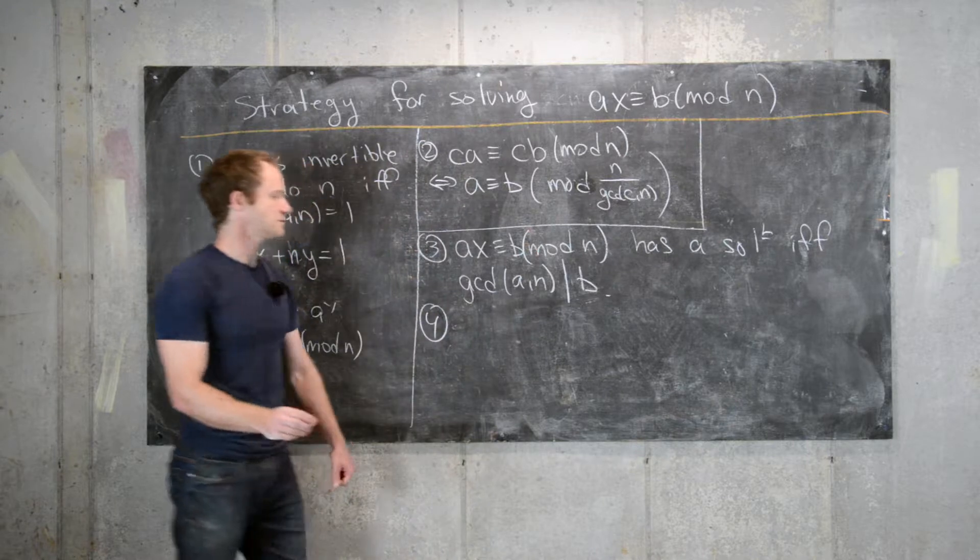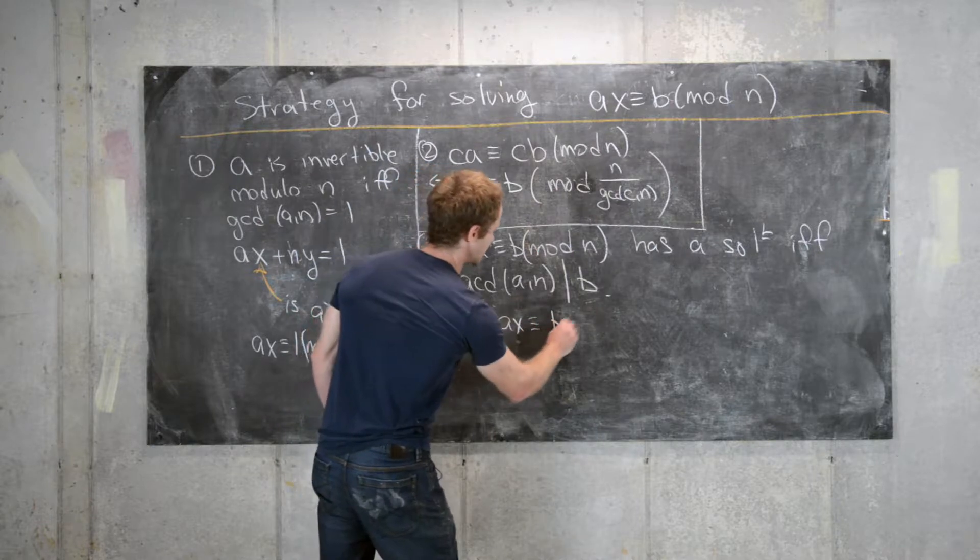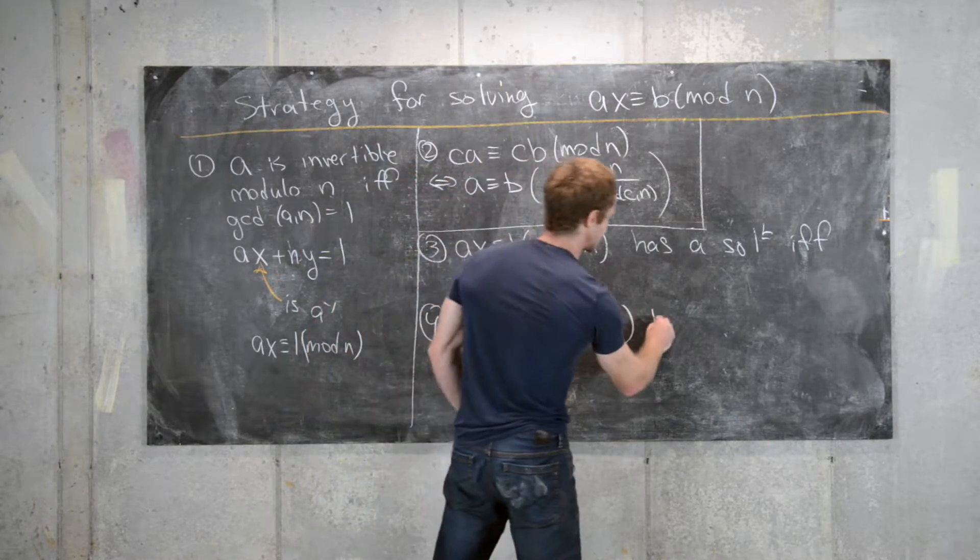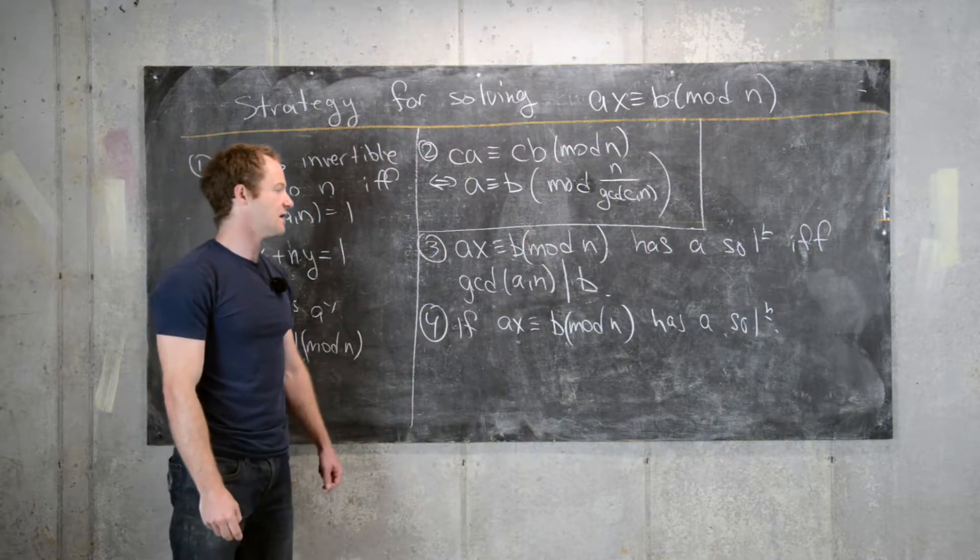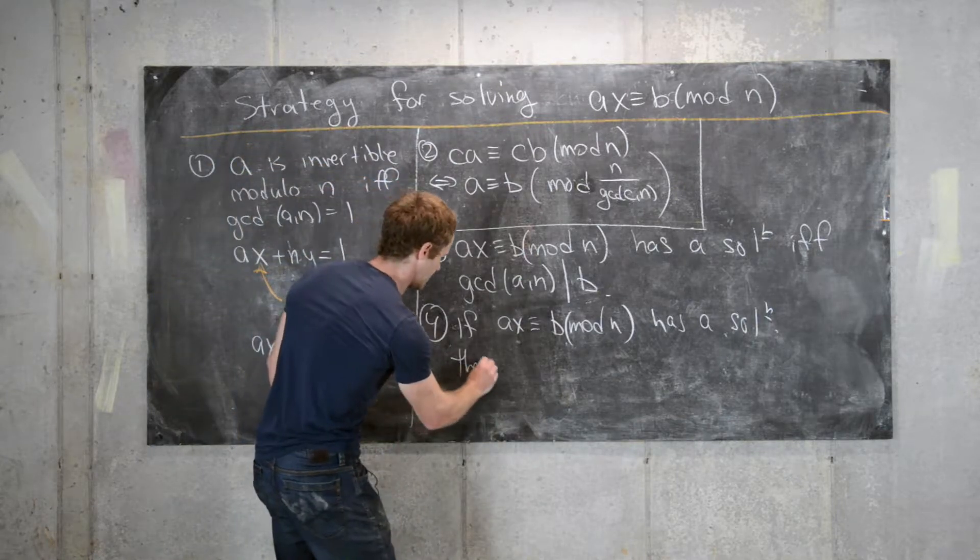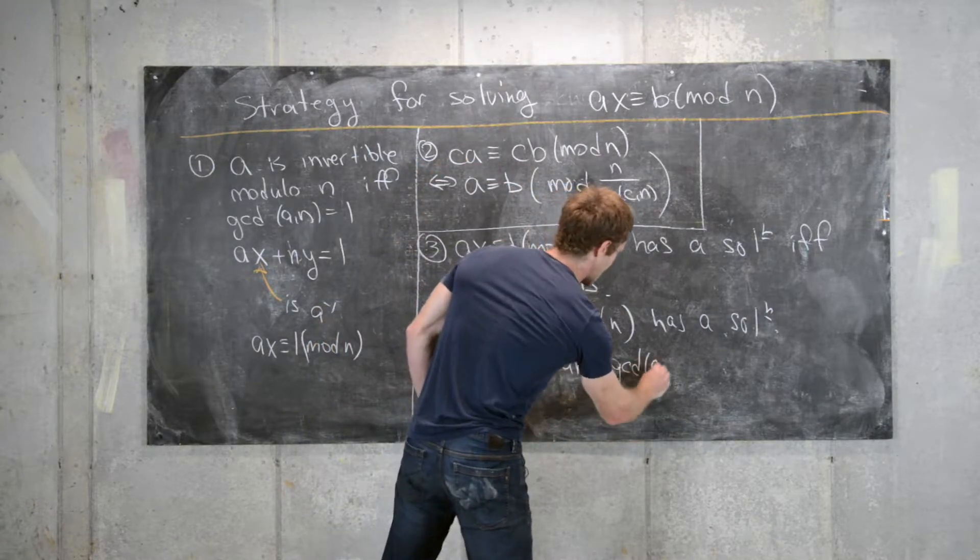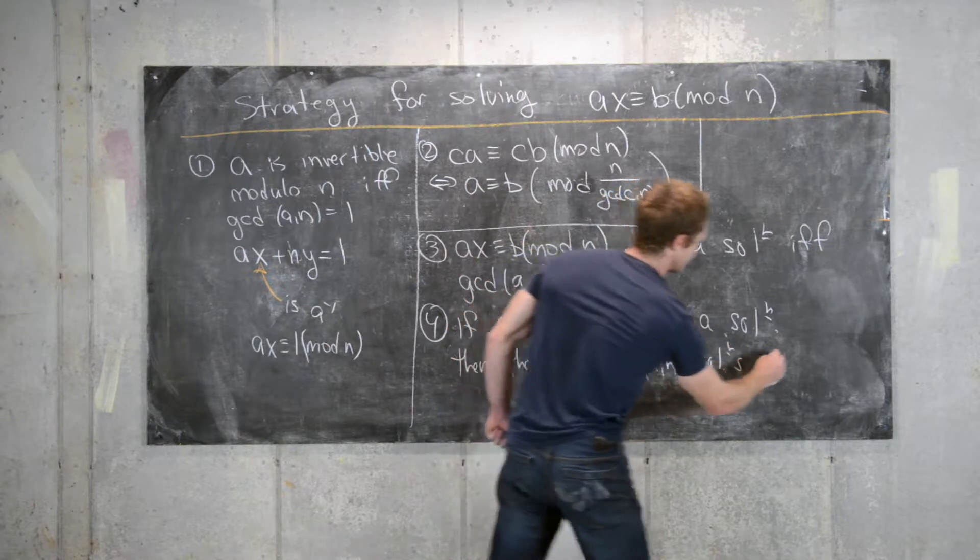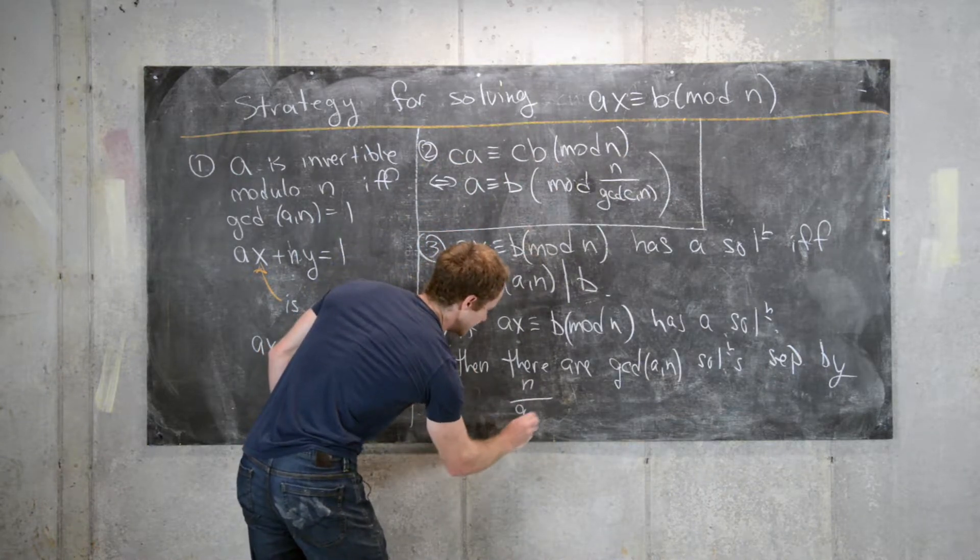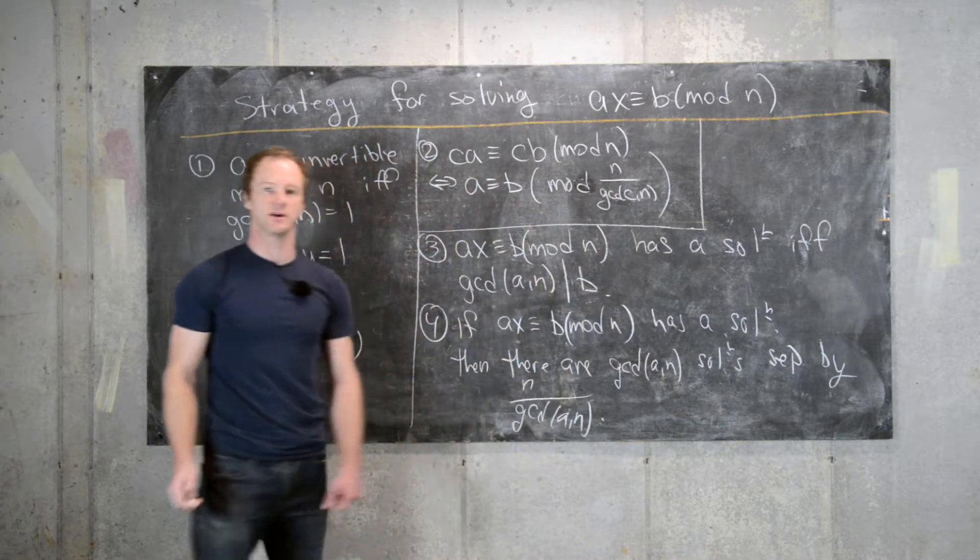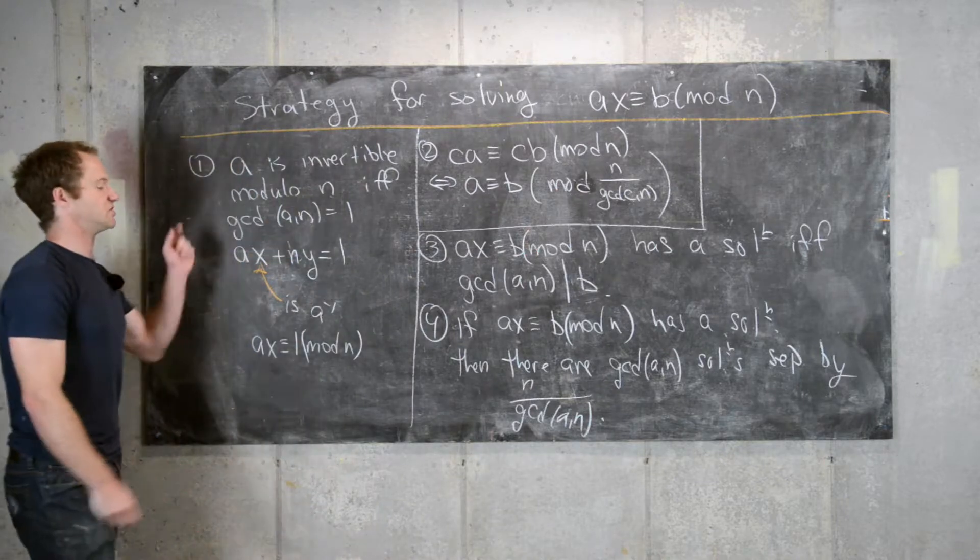And then the next thing is if Ax is congruent to B mod n has a solution, in other words, if the GCD of A and n divides B, then there are GCD of A and n solutions separated by n over the GCD of A and n. So now let's clean up the board and we'll look at an example of a couple of these strategies in play.